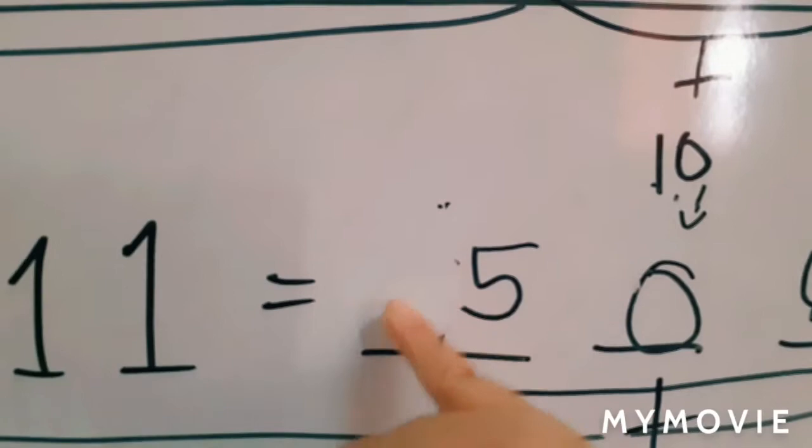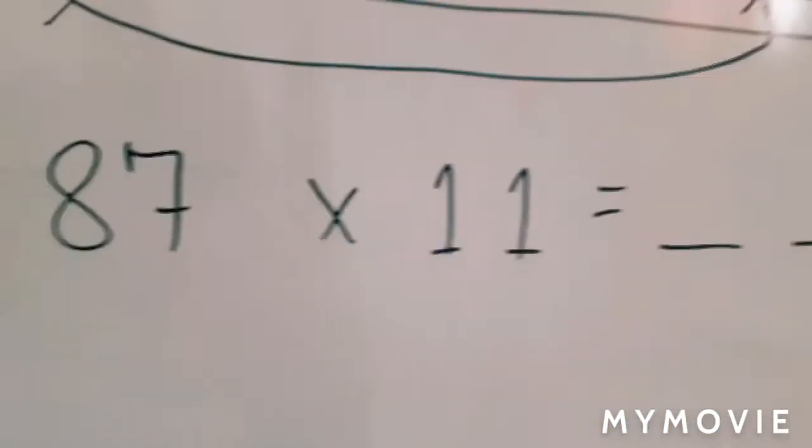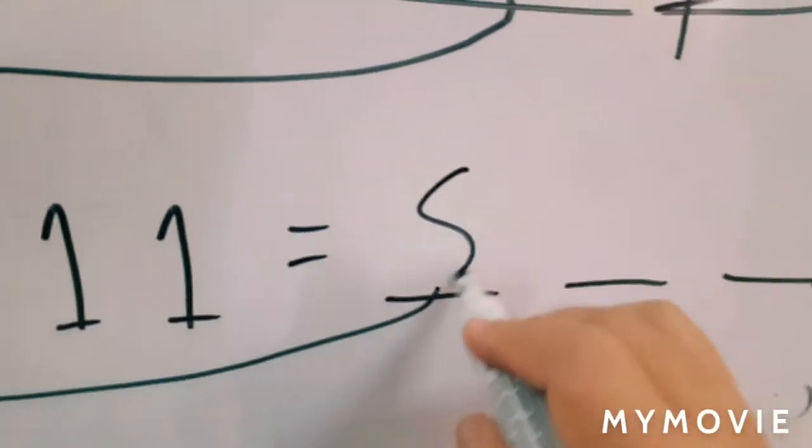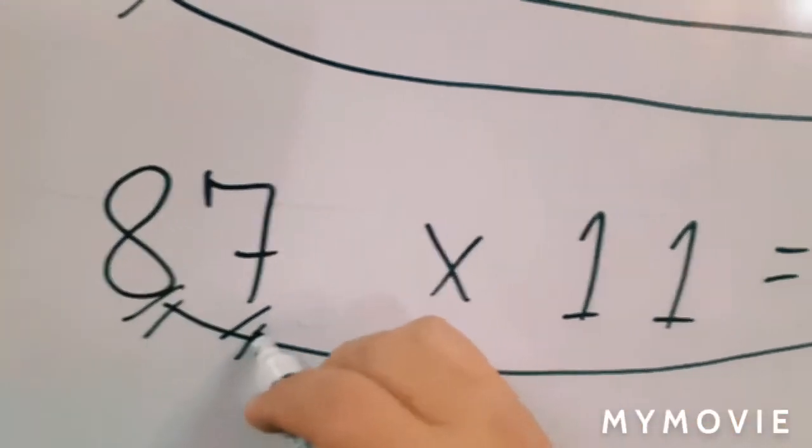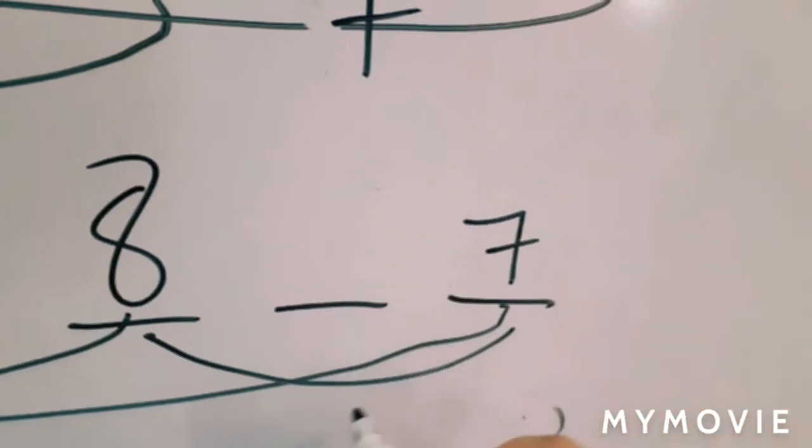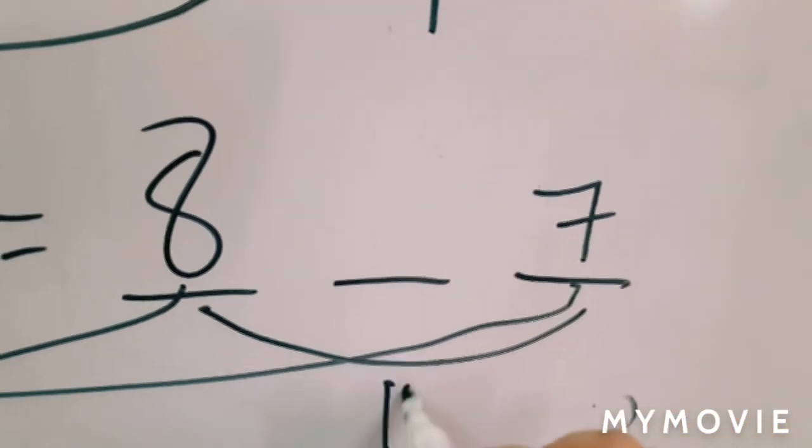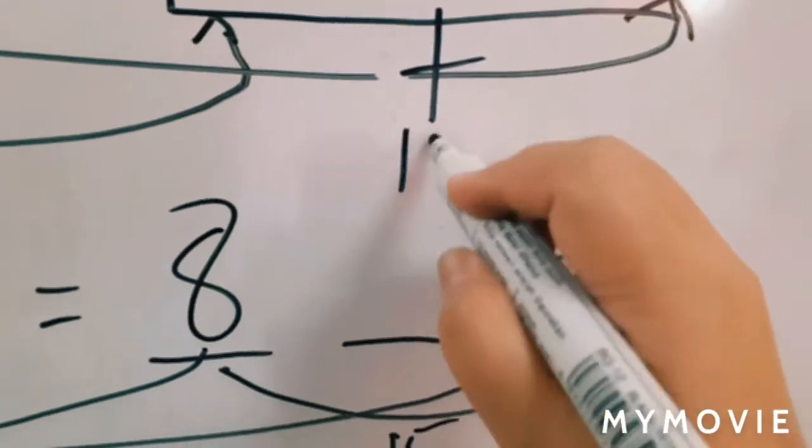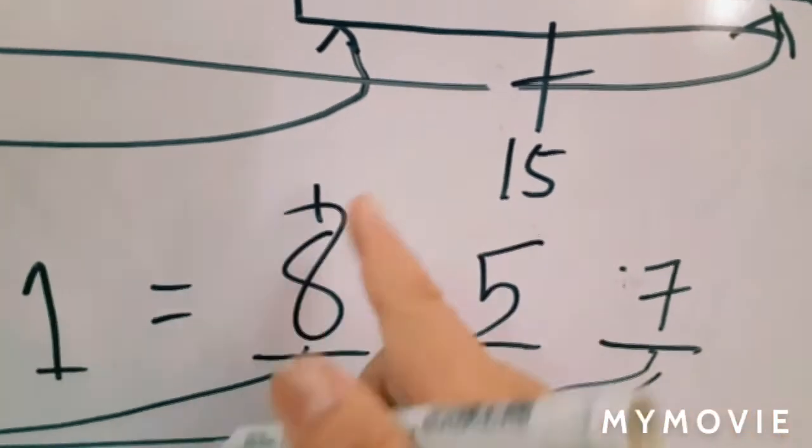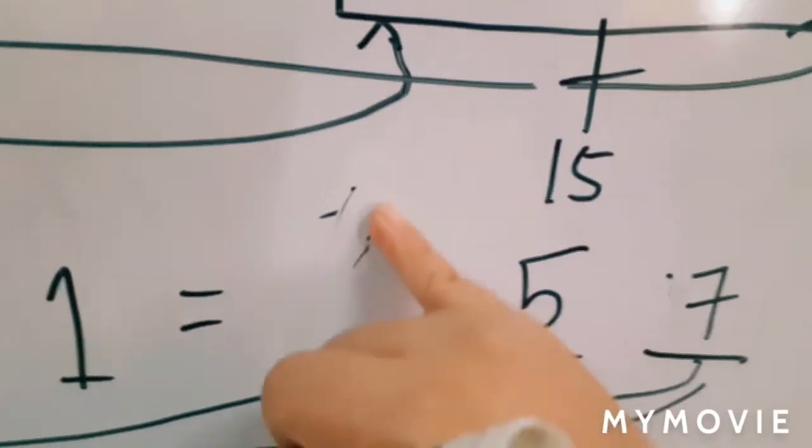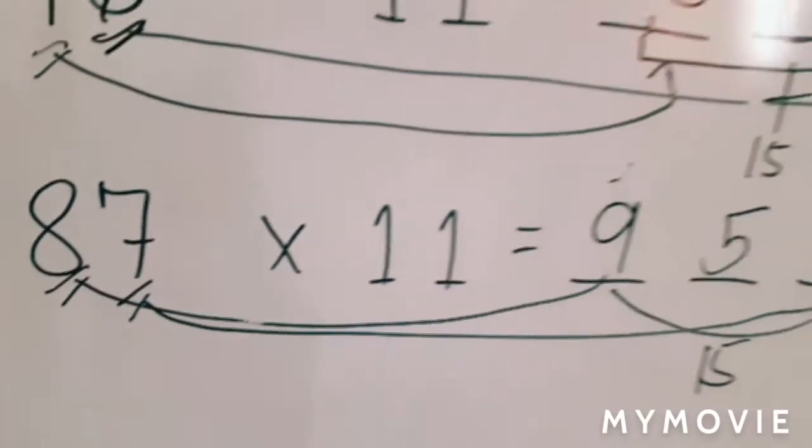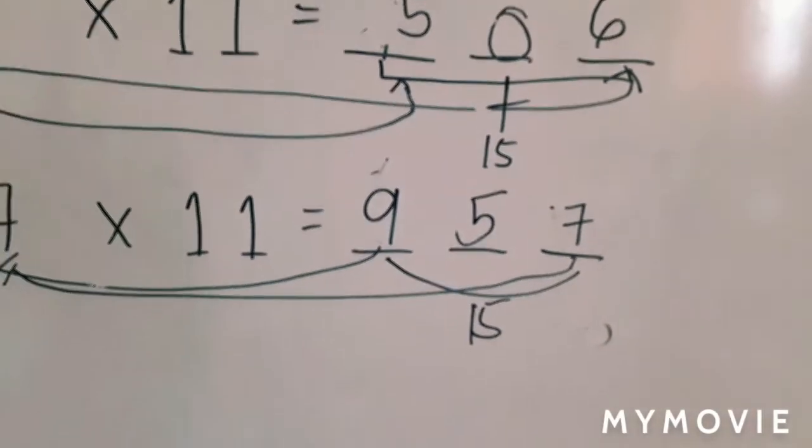Last, 87 times 11. We put 8 on our first digit, 7 on our last digit. Let us add. 8 plus 7 is 15. So, 15 is 1 and 5. We bring down 5 here. We carry 1 here. 1 plus 8 is 9. Therefore, the answer in 87 times 11 is 957.